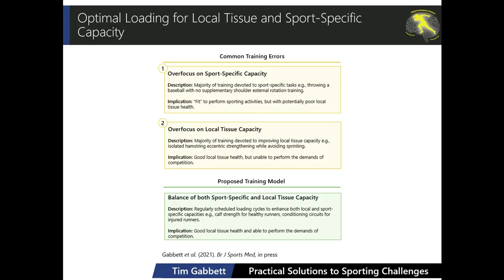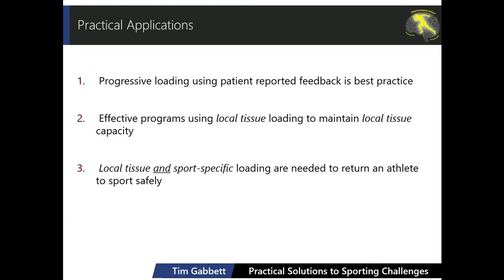The implication is that you have an athlete with good local tissue health who is able to perform the demands of competition. As a take-home point, whether you're a practitioner in a clinic or working with elite athletes, progressive loading is key. We need to use patient-reported feedback and may need to modify our RPE scale to emphasize local tissue health — for example, asking 'how hard was that exercise on your Achilles or hamstring?'